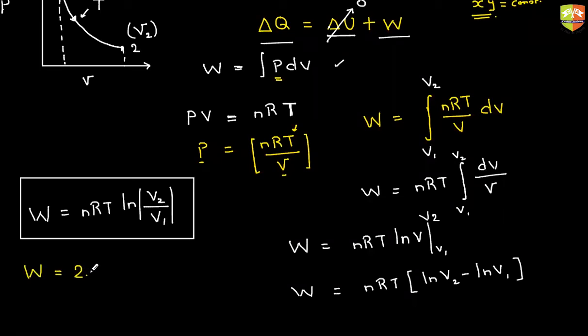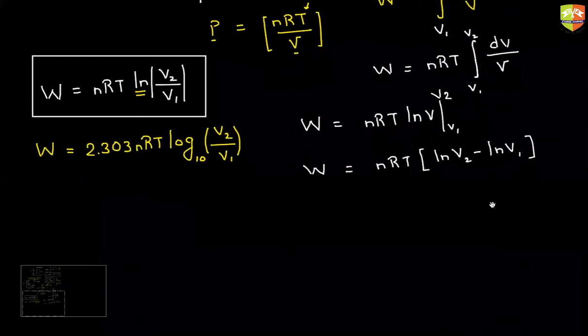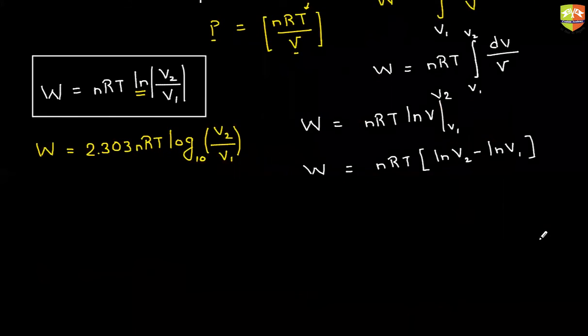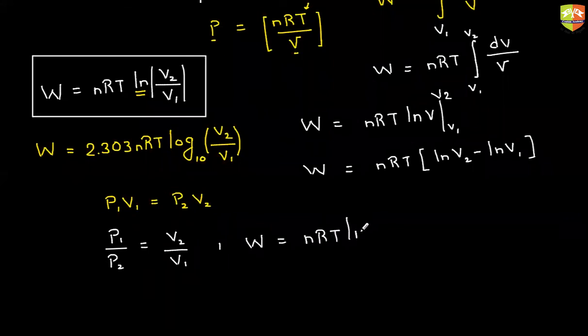This is a derivation of the work done in isothermal process. If you want to convert it to log base 10, work done will be 2.303 NRT log V2 by V1. If you want to write down the same formula in terms of pressure, pressure at 0.1 is P1 and at 0.2 is P2. I know that P1 V1 is equal to P2 V2, so I will get P1 by P2 equal to V2 by V1. Same work done I can write in terms of pressure, NRT ln P1 by P2.